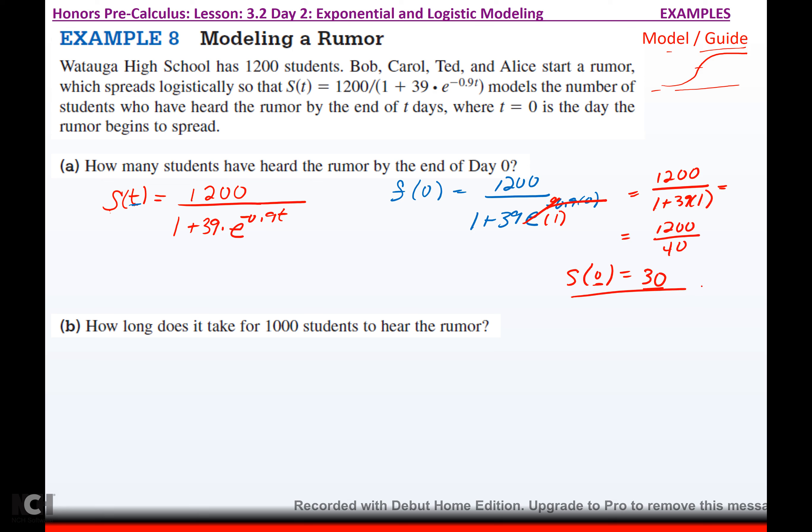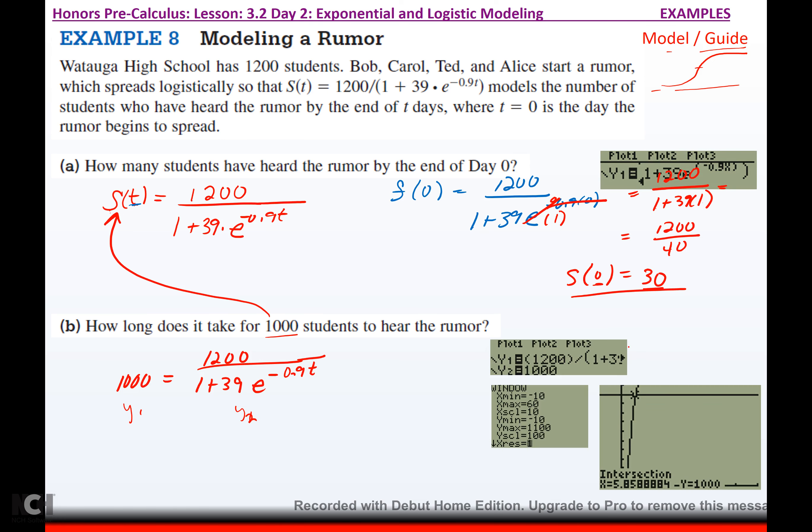It says, how long does it take for 1,000 students to hear the rumor? So, now they're telling me the number of students that know the rumor. So, I'm setting this side equal to 1,000 equals 1,200 over 1 plus 39 E to the negative 0.9 T. Now we're going to, again, I can't get that out of the exponent. So, we're going to do Y1, Y2 and calculate the intersection point. So, if I do that, I type in this for Y1, 1,000 for Y2, set my window to handle the data, calculate the intersection point, which says it's going to take approximately 6 days. And at the end of 6 days, at least 1,000 students will have heard the rumor.